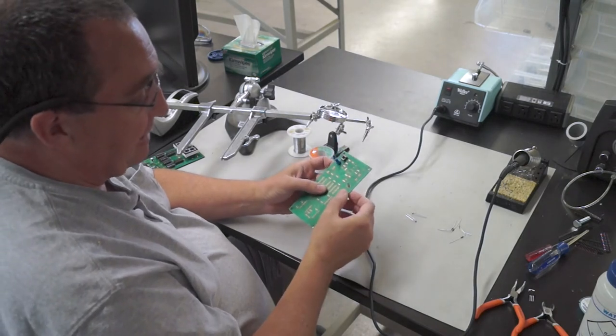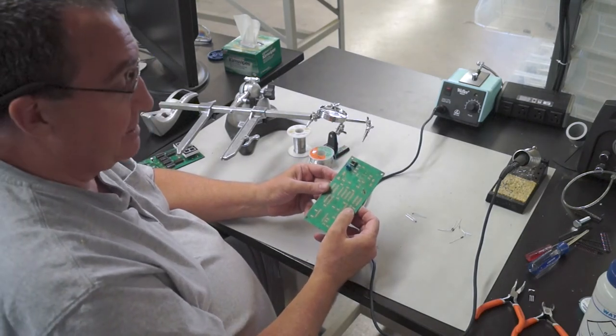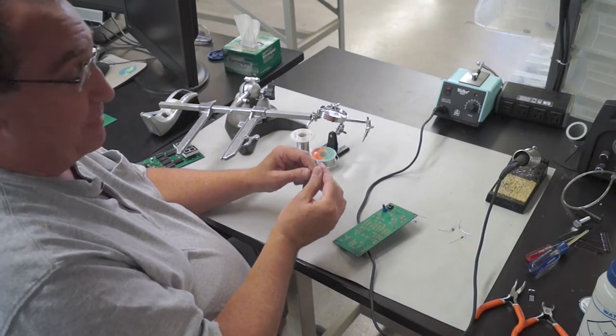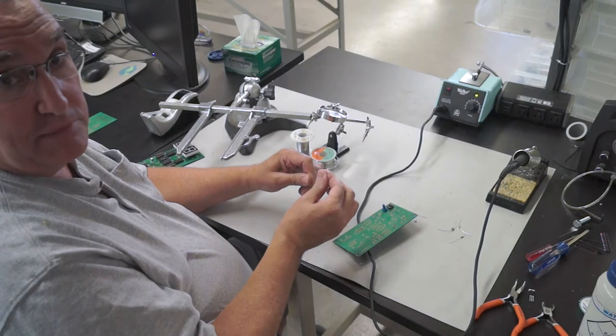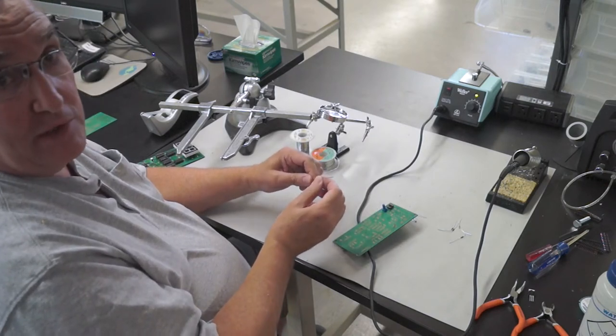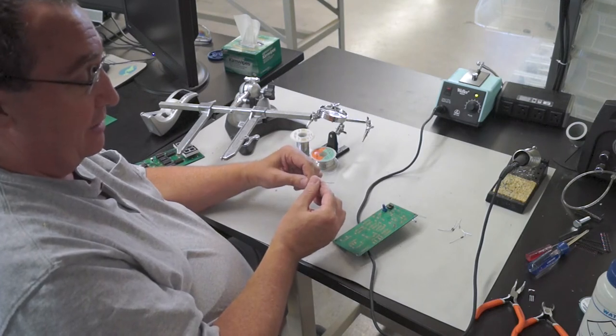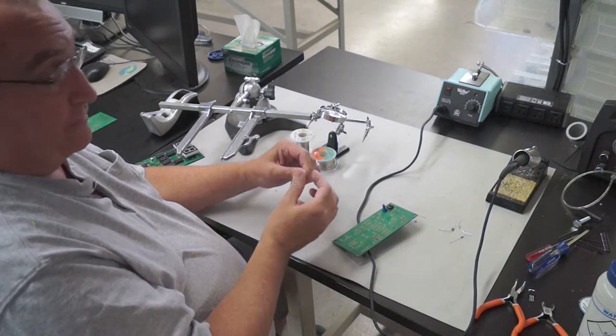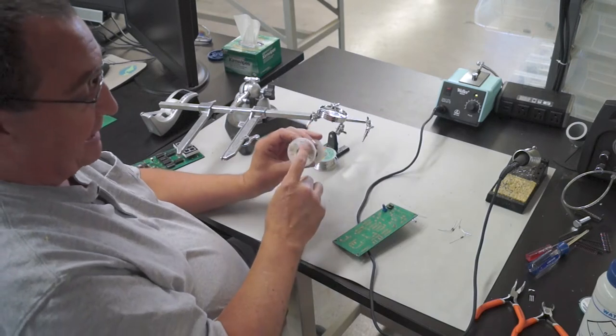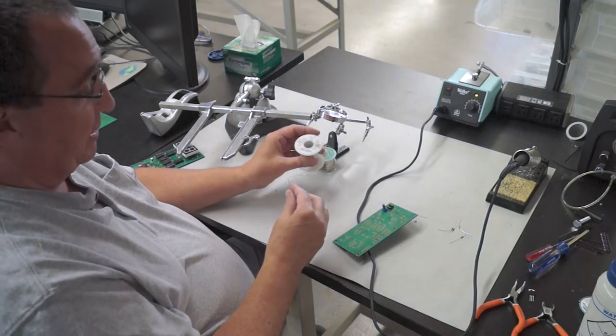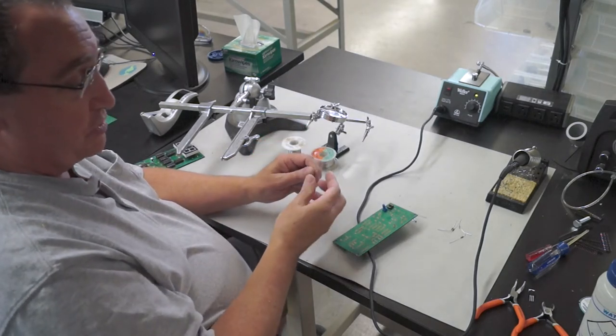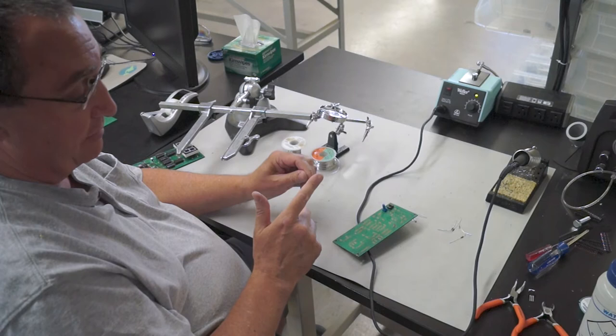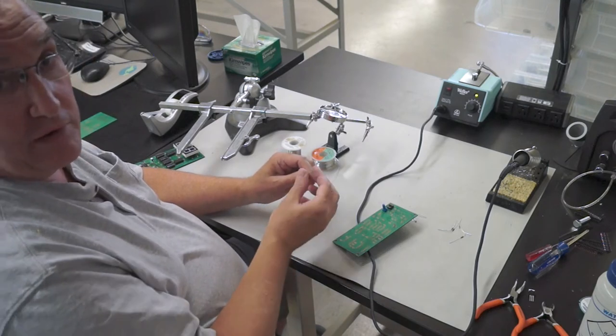Once you've got your parts mounted into the board, now we're ready to actually solder the other side. Solder comes in several different thicknesses and different compositions. Each different type of solder has different melting points. Standard 60-40, which is 60% tin, 40% lead, melts at about 370 degrees. Choose whichever thickness is appropriate for the type of job that you're doing. If we're doing fine work on a board, we want to have a thin solder.